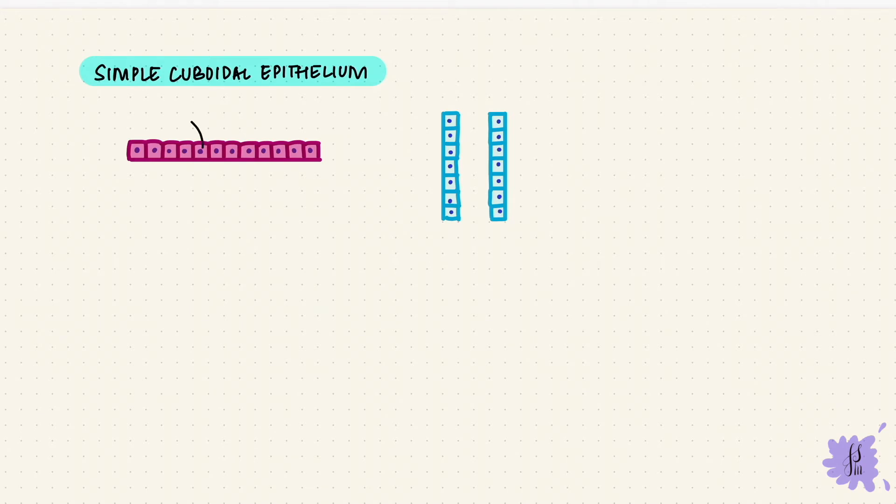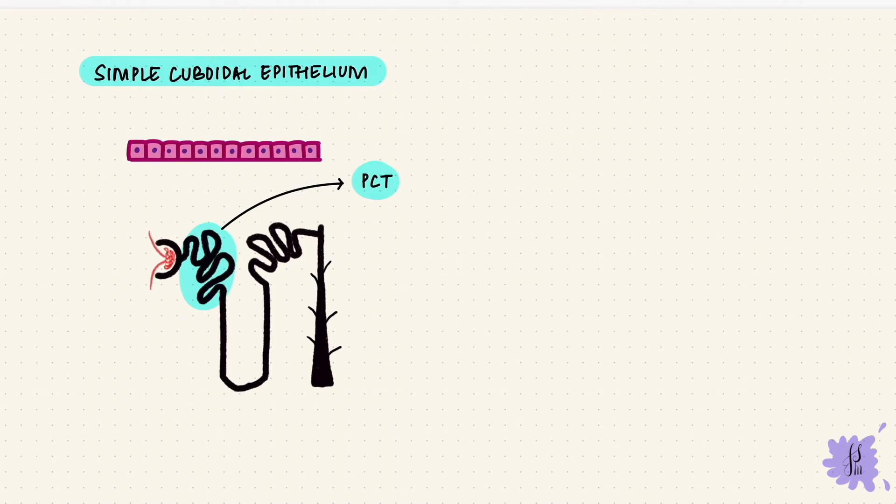Simple cuboidal epithelium is just a layer of cuboidal cells with the nucleus in the center, and they line ducts of glands. They are active so they can secrete and absorb. So they can also line the renal tubules like the proximal convoluted tubule.